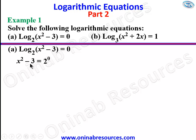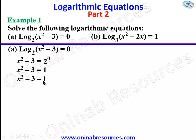We apply the appropriate law: 2 raised to power zero is 1, so x² − 3 is equal to 1, since any number to the power of zero is 1. Collecting like terms, we write x² − 3 − 1 = 0, so we now have x² − 4 = 0, forming a quadratic equation.